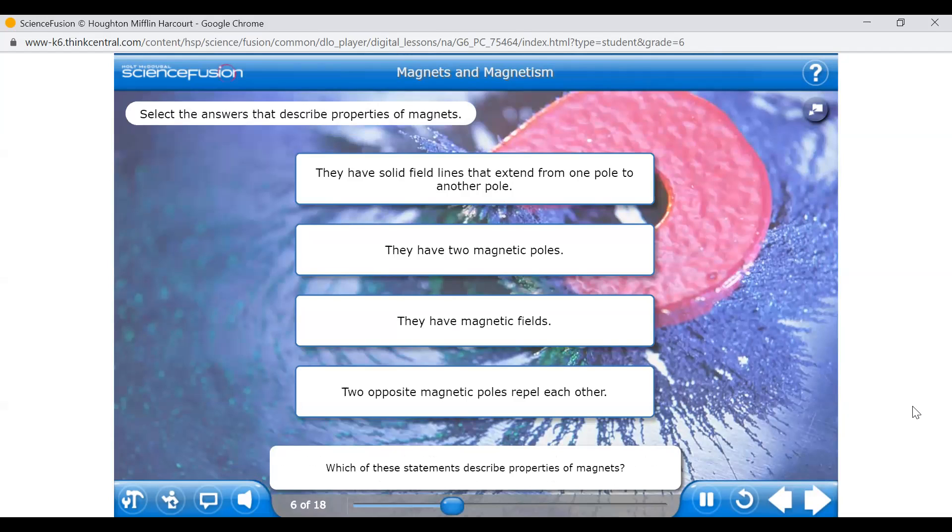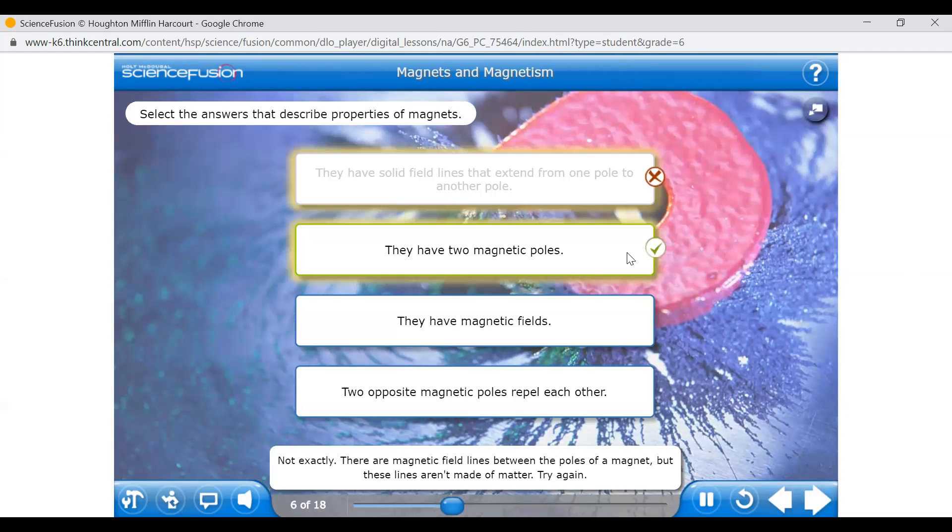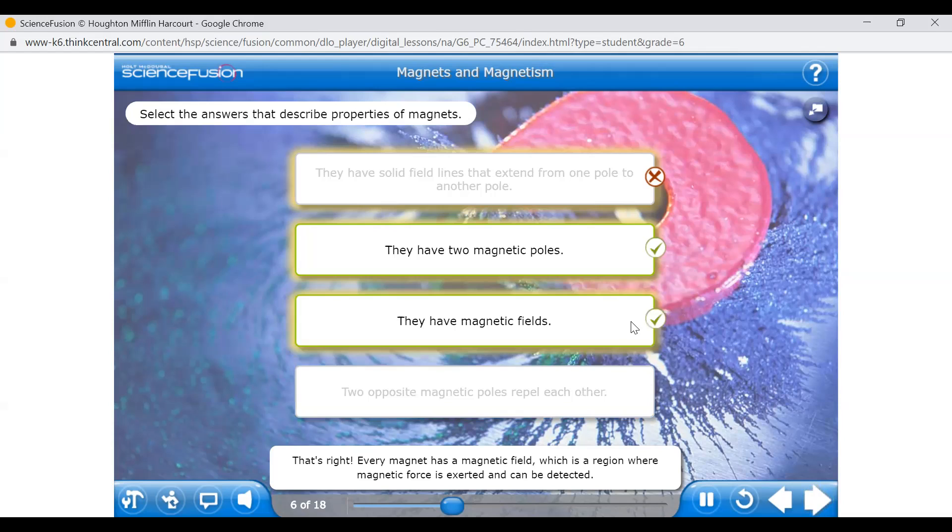You've learned about some basic properties of magnets. Which of these statements describe properties of magnets? Click the correct choices. Excellent! All magnets have two opposite magnetic poles. The basic properties of magnets are that they have magnetic fields and magnetic poles, and that opposite poles attract while similar poles repel. Magnets can attract iron. That's right!